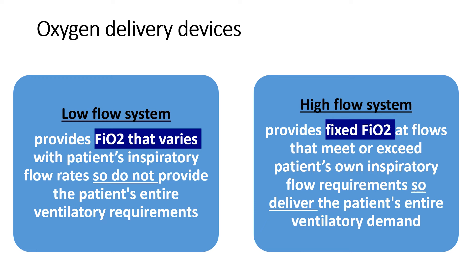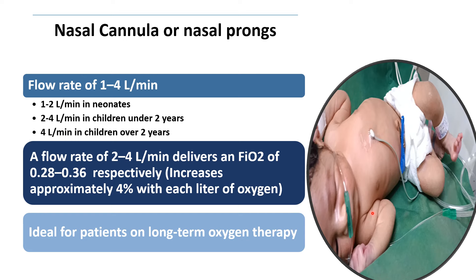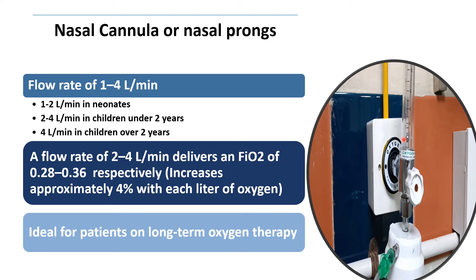In low flow oxygen delivery devices, the first is the nasal cannula or nasal prongs. The two soft prongs are attached to tubing connected to the oxygen source. The size of the nasal prongs should be 50 percent or less of the nostril diameter, leaving sufficient space for exhalation. The prongs are fixed in the nostrils and the tubing is fixed to the face and connected to the oxygen source.